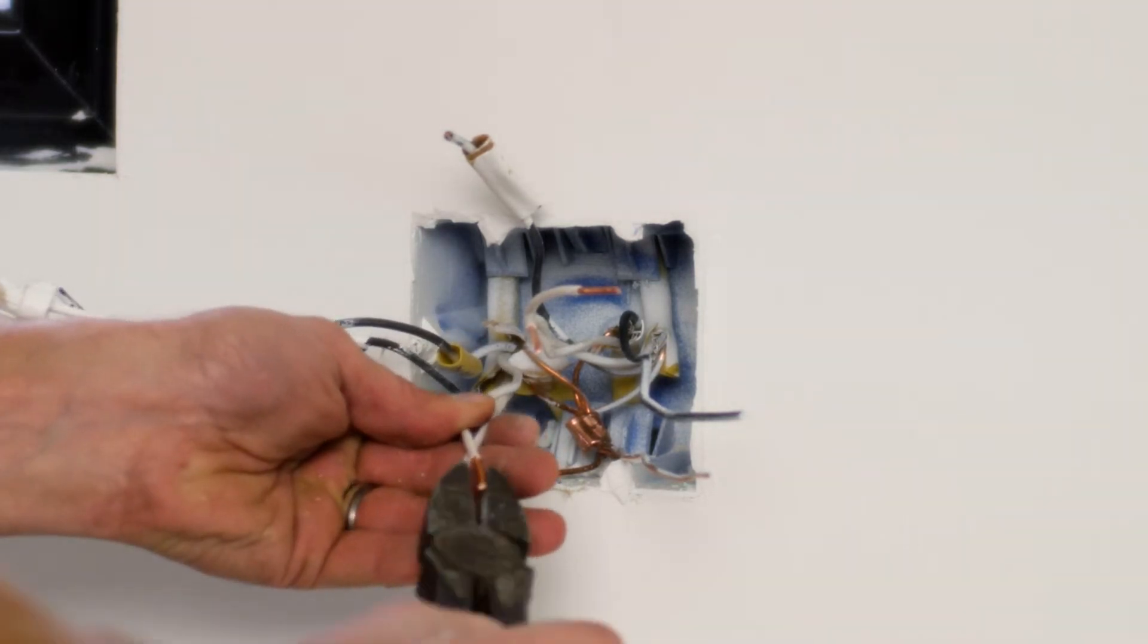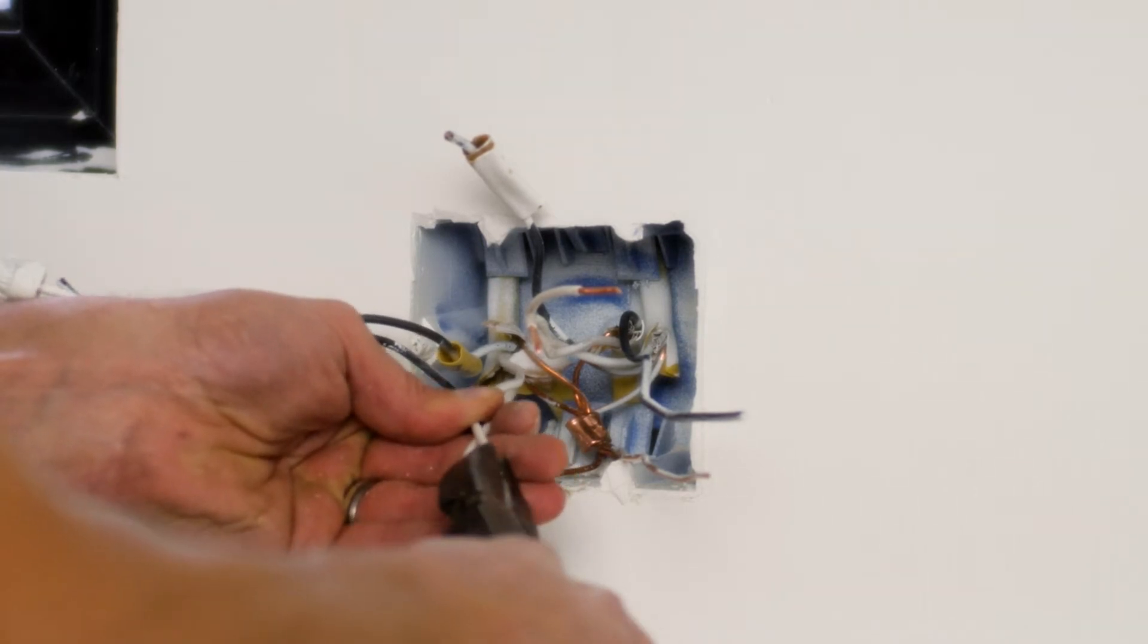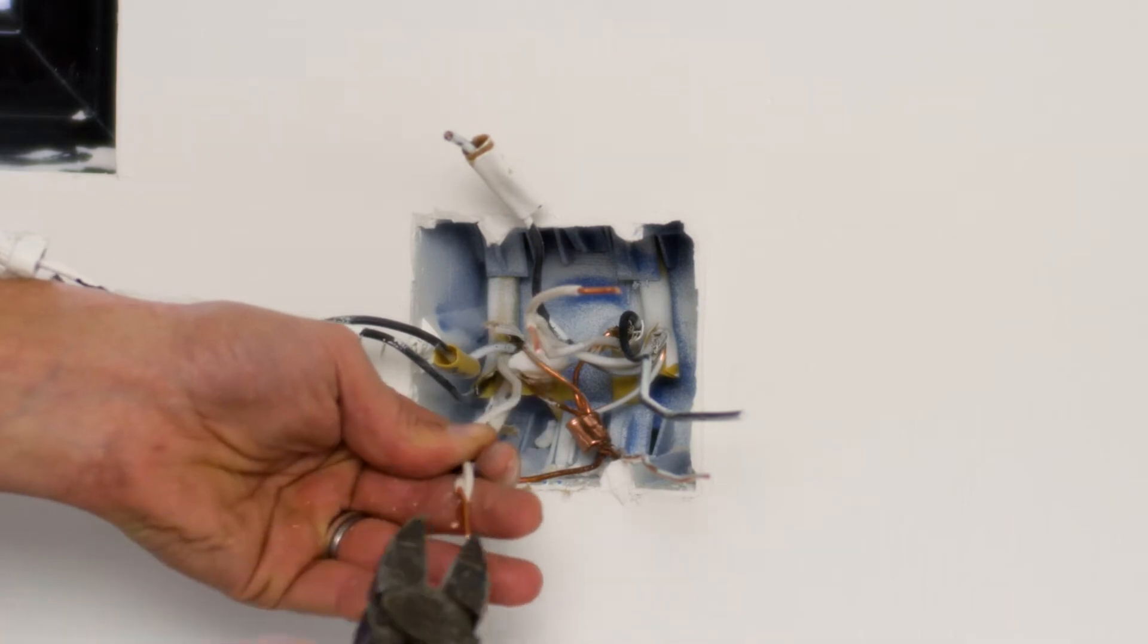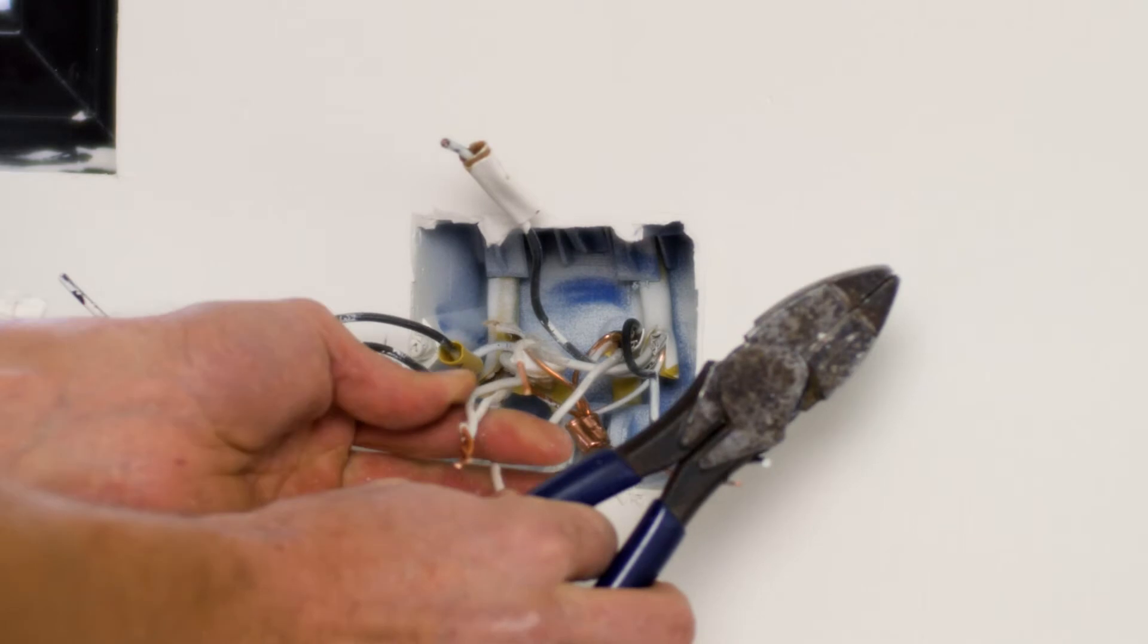We'll cover wire gauge in a later video. I'm going to take the first two conductors, utilizing my lineman's pliers. I'm going to give them just a subtle pre-twist, maybe one full twist.